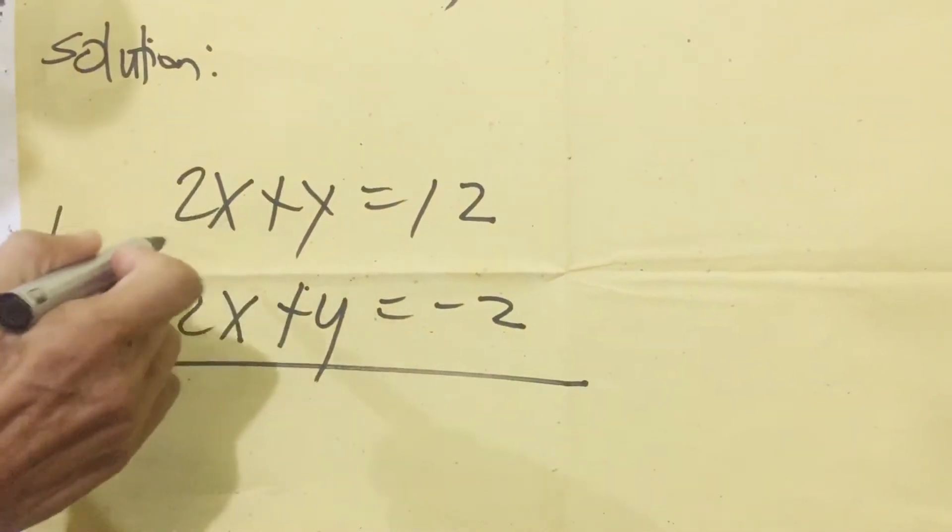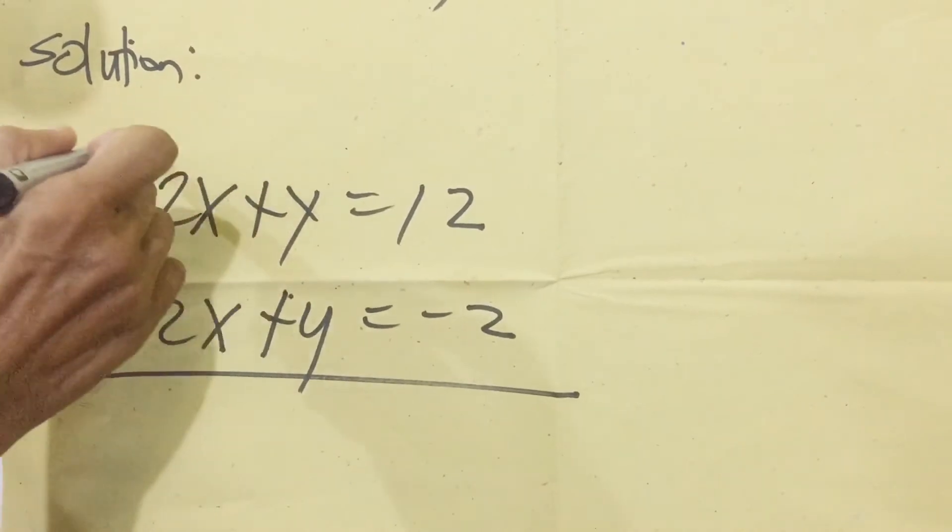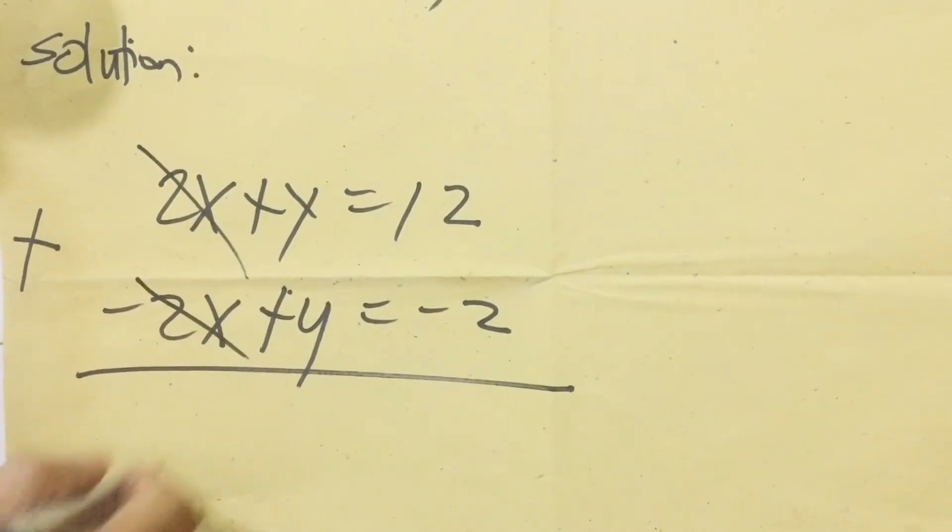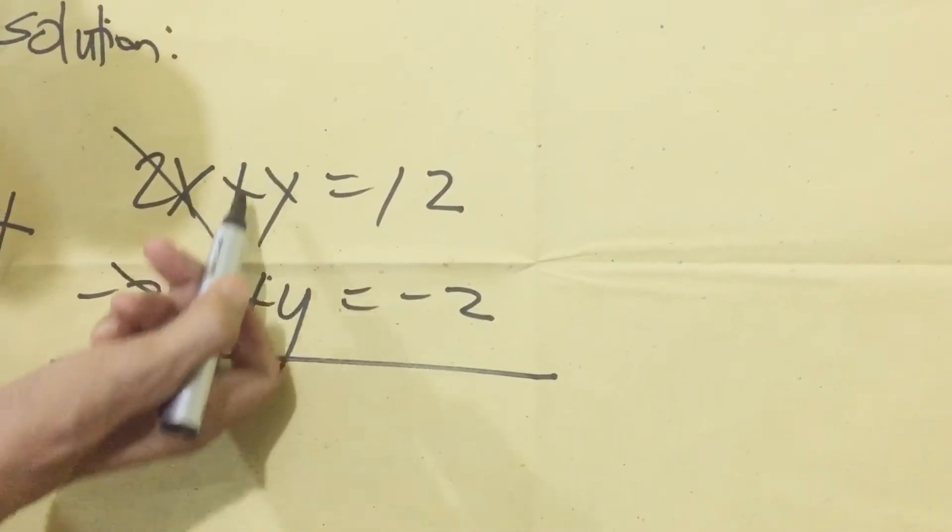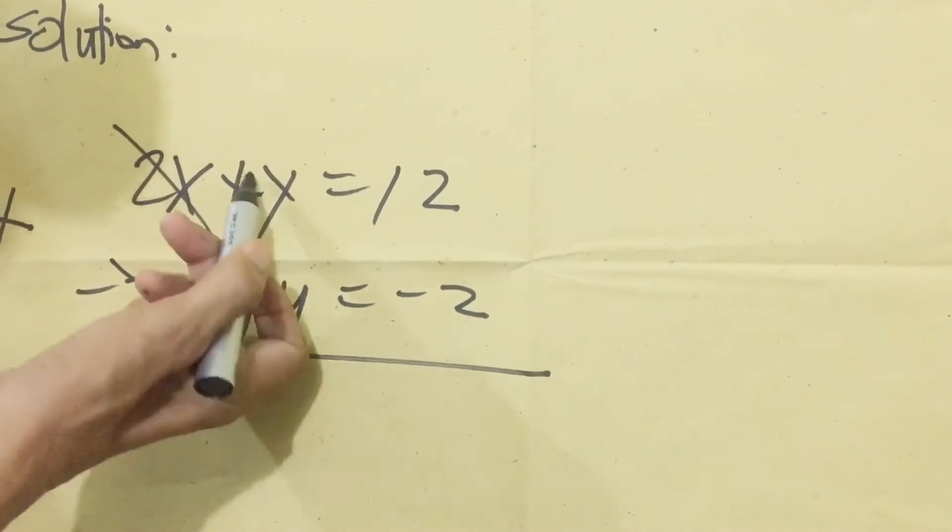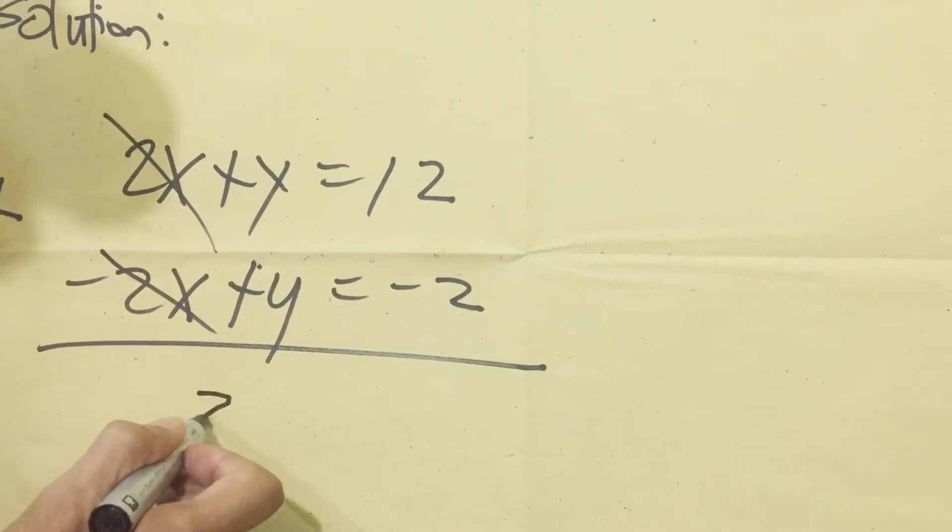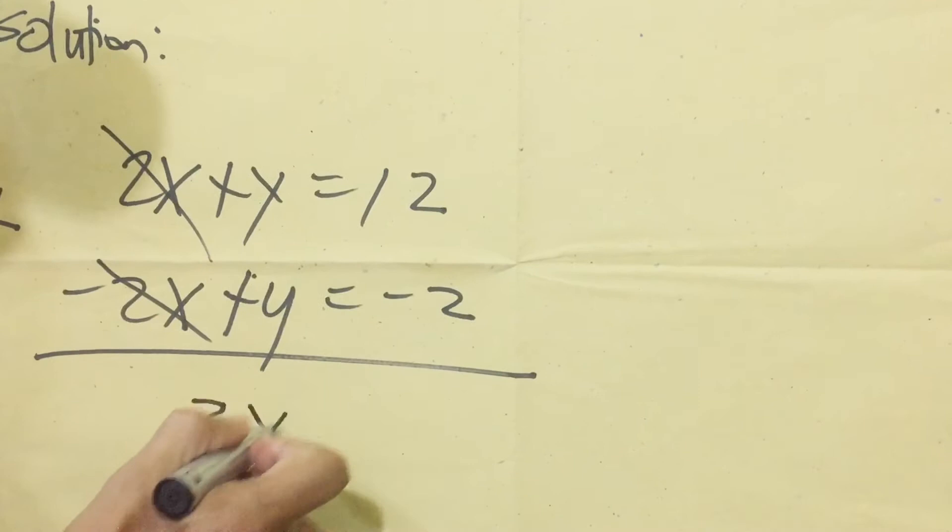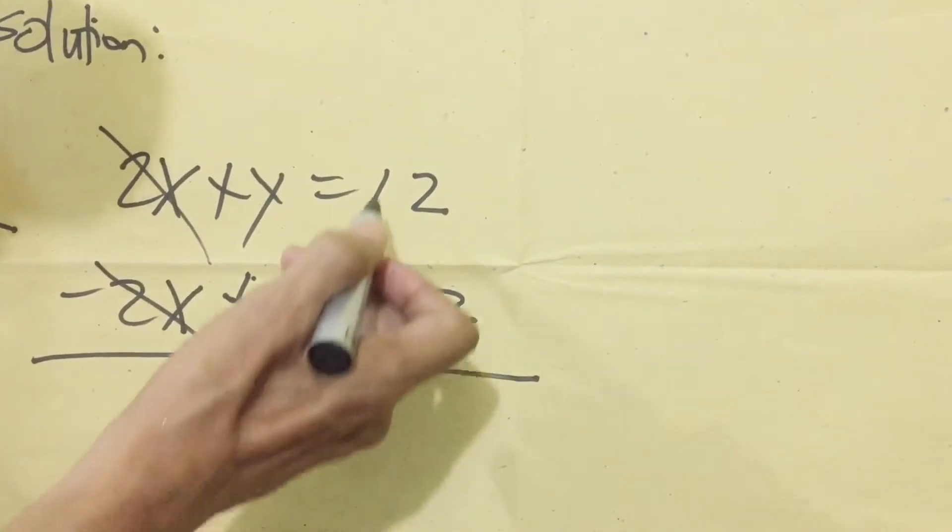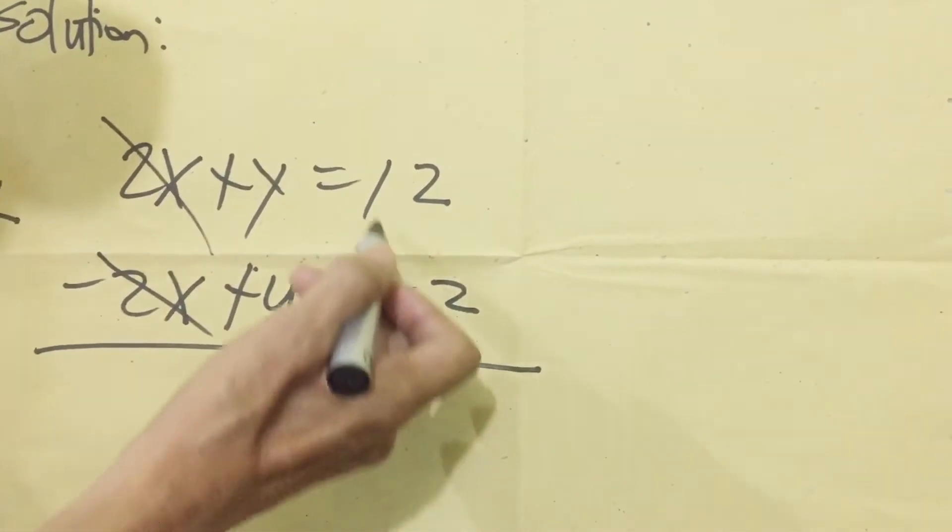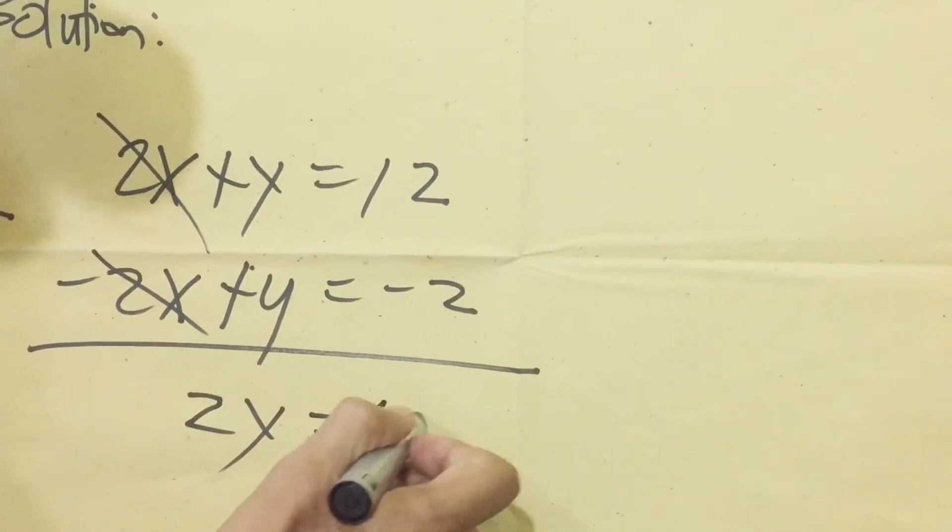So we're going to add now, eliminate the 2x and negative 2x equals 0. Then we have a silent one here, so that's why 1 plus 1 equals 2. Then copy the y. Equals, since positive negative, unlike sign, we're going to minus 12 minus 2 equals 10.